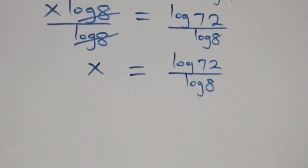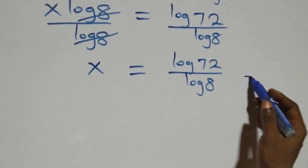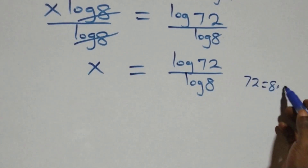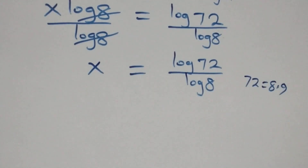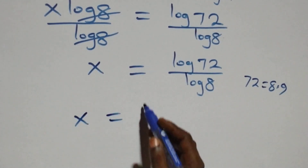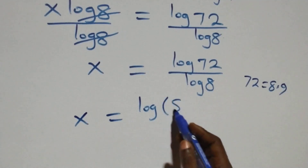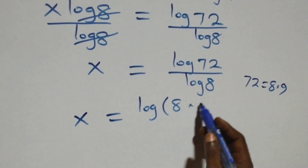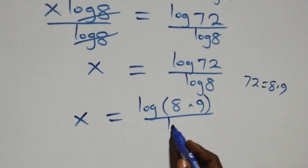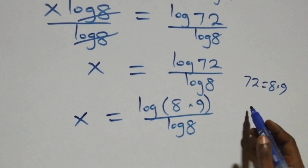From here, we can rewrite seventy-two as 8 times 9. So what we have becomes x equals to log of (8 times 9) over log 8.